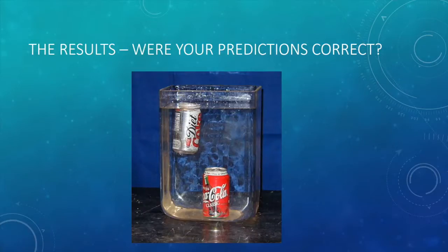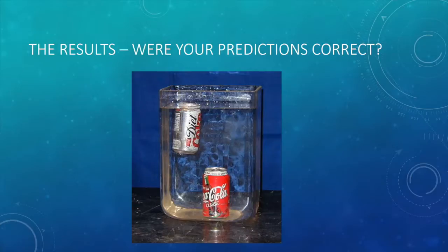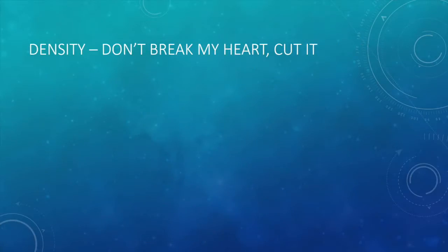Why do you suppose one can of pop sinks and the other floats? In general, what determines whether an object will sink or float? Is it based on weight? What about size? Is there something else that determines whether an object will float or sink? An object's ability to float or sink is determined by its density.